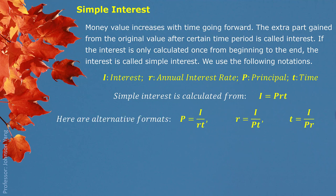There are some alternative formats from this original interest expression. We can solve for principal as interest divided by RT. We can also solve for annual interest rate as interest divided by PT. And we can also get time period between present value and future value as interest divided by PR.